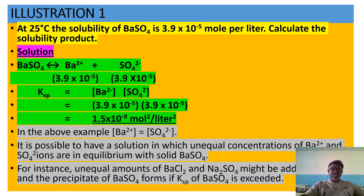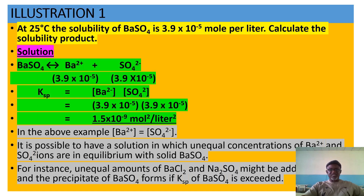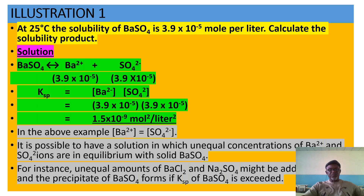Illustration one: the solubility of barium sulfate is 3.9 × 10⁻⁵ mol/L. Calculate the solubility product. Barium sulfate ionizes as: BaSO₄ → Ba²⁺ + SO₄²−. Since it is a 1:1 electrolyte, barium has one mole and sulfate also has one mole. So Ksp = (3.9 × 10⁻⁵) × (3.9 × 10⁻⁵), which gives us the solubility product for barium sulfate.